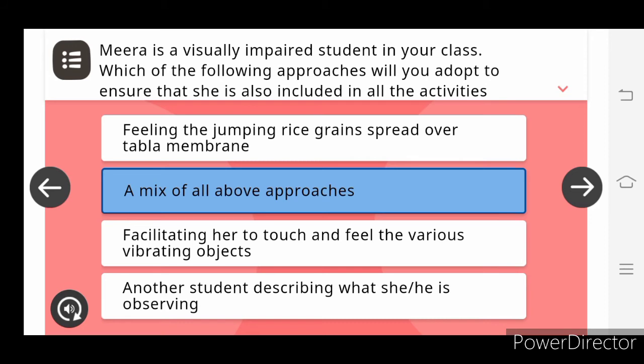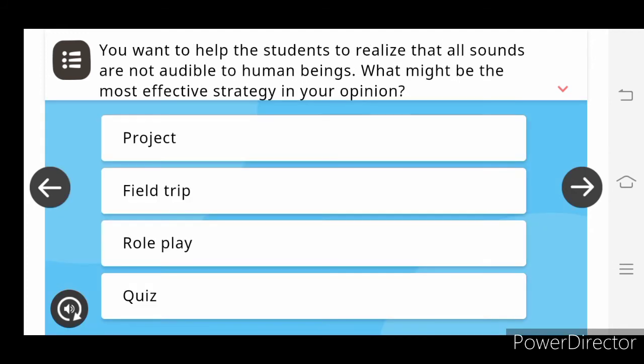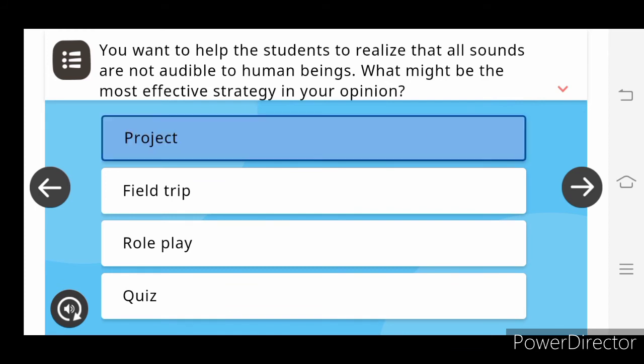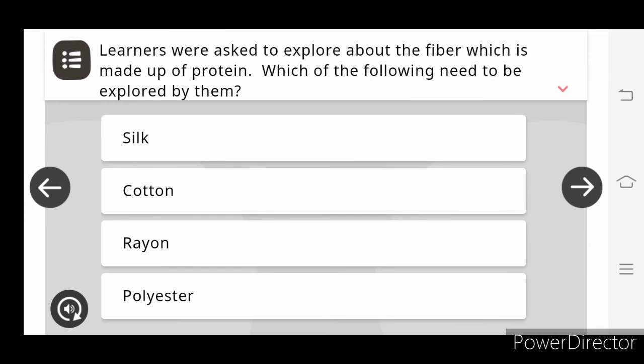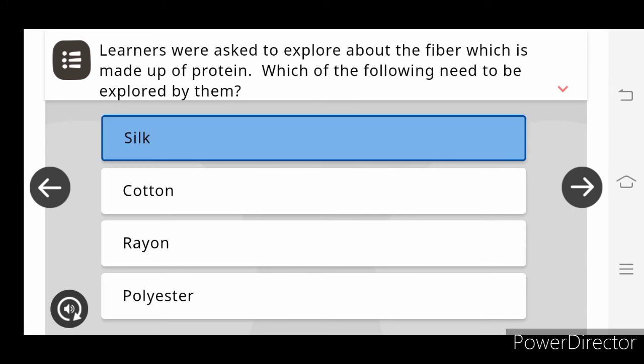You want to help the students to realize that all sounds are not audible to human beings. What might be the most effective strategy in your opinion? So it would be the project. Learners were asked to explore about the fiber which is made up of protein. Which of the following needs to be explored by them? It's silk.